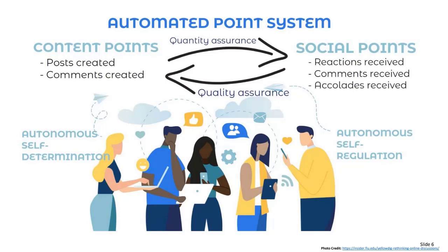While participating in your Yellowdig community, students receive points for interacting with each other — not just posting but responding. Depending on your community settings, students can earn points for posting, commenting, receiving comments on their post, receiving reactions to their post, and receiving accolades from community facilitators such as instructors. The point system has advantages compared to traditional discussion forums.